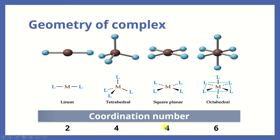If the coordination number of the metal ion is 4, we can have two possible shapes or geometries. One is the tetrahedral shape, and the other is the square planar shape. The ligands can be monodentate or bidentate. So the shape can either be tetrahedral or square planar.